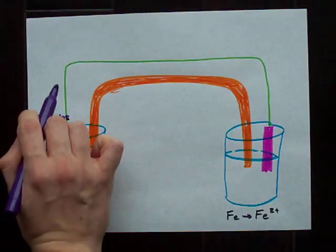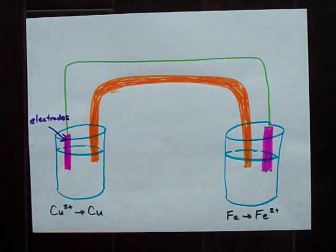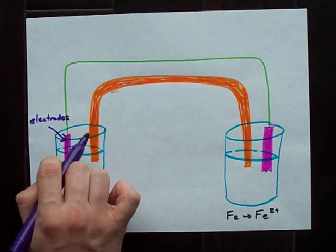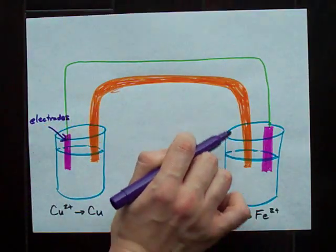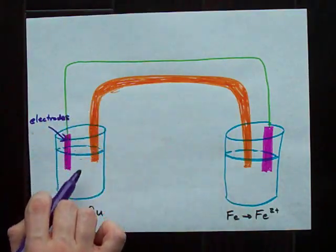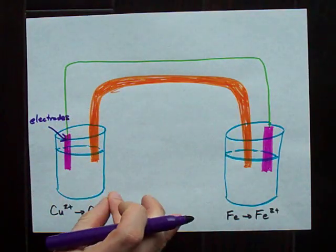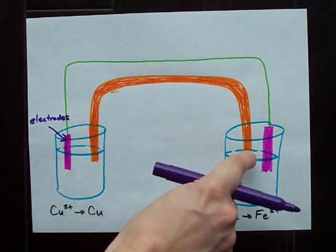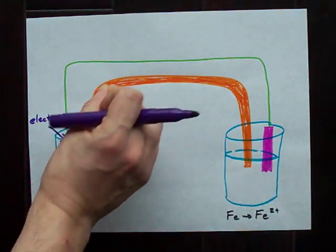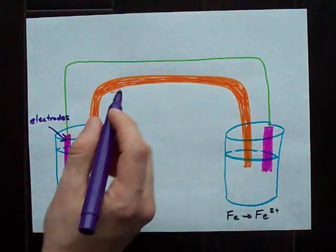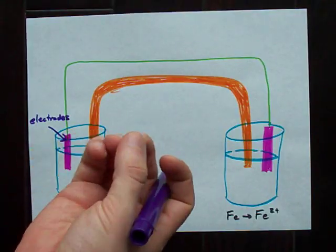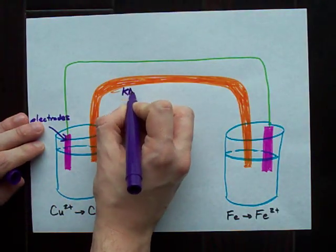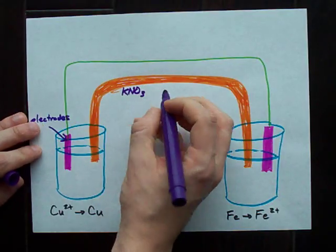The two electrodes are connected with a wire, and there's a little tube of gel stretching from one beaker to another. Usually the beakers are close together, and this is just a U-shaped tube. Inside is a gelatin with salt in it — when I say salt, it's almost always potassium nitrate.